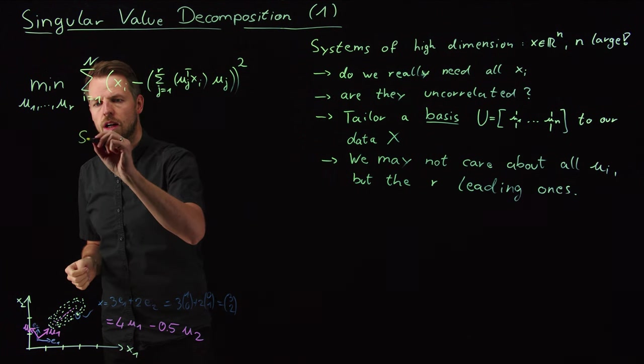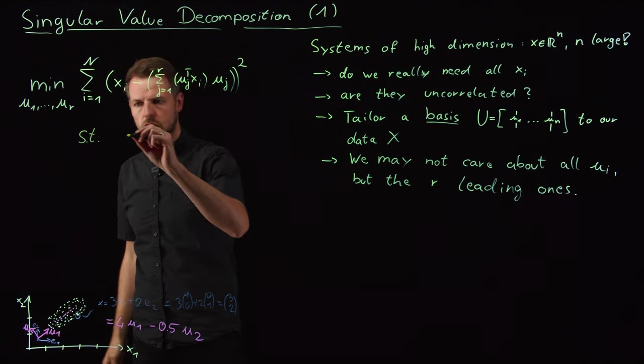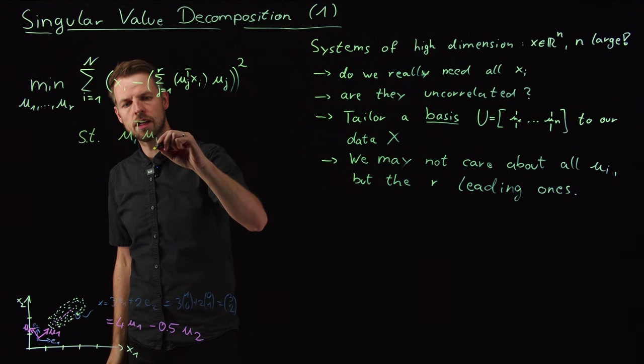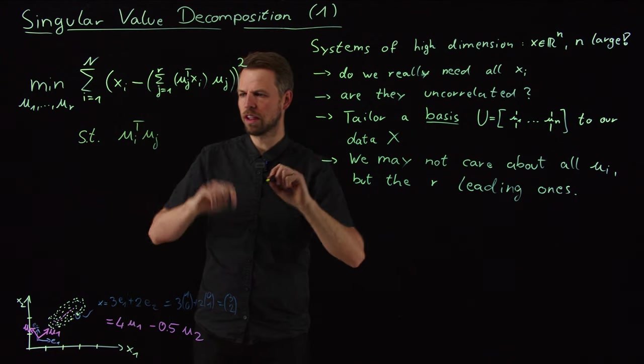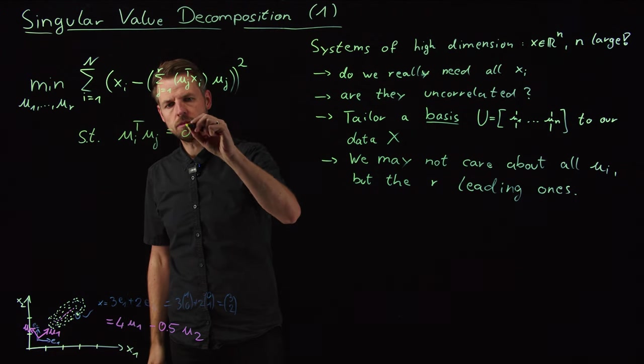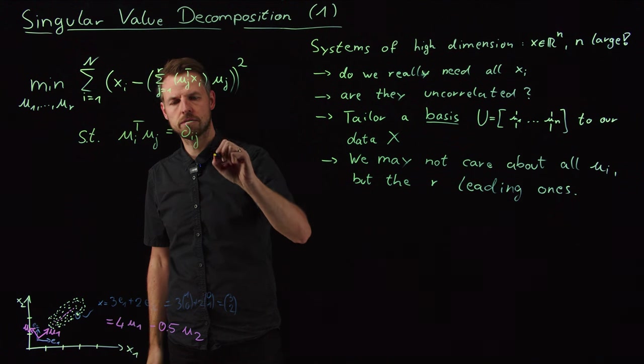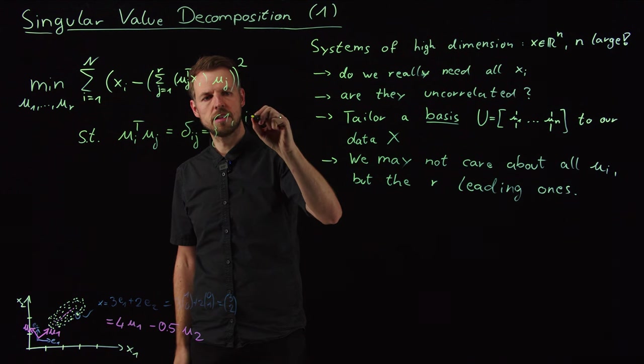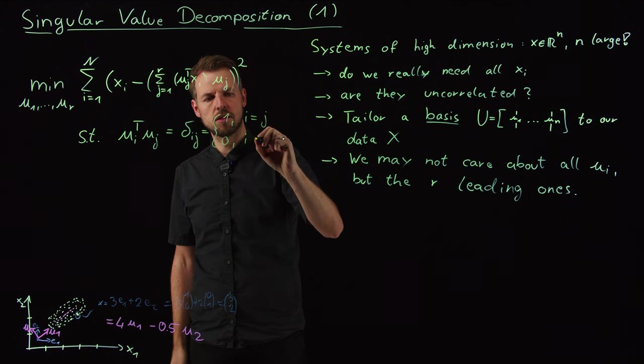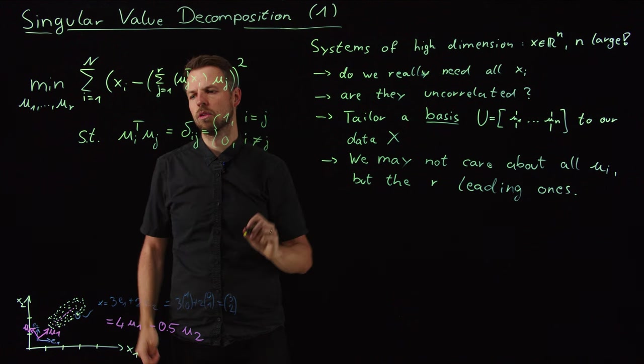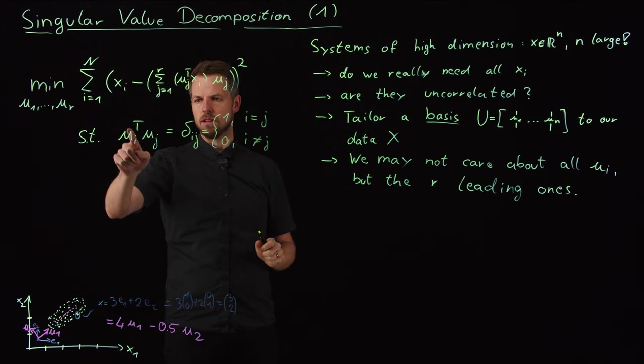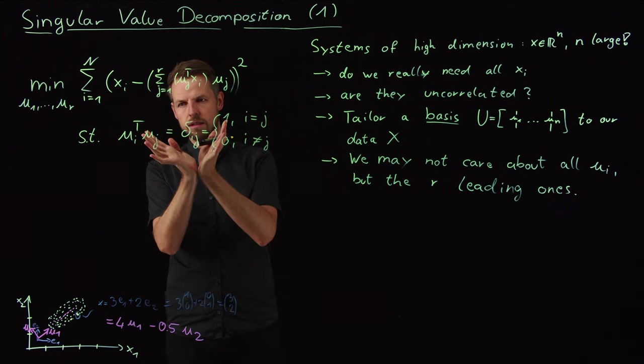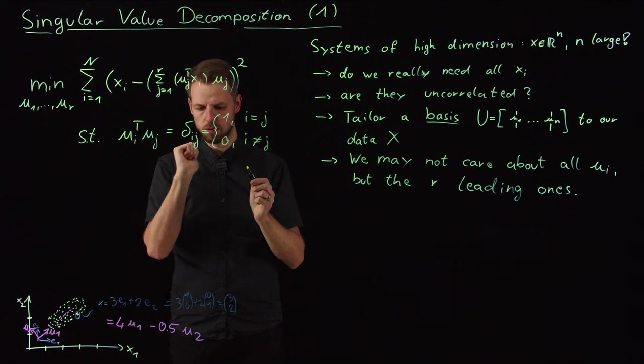One thing that we are going to add to make this a little bit more useful, let's say, we are not picking any vectors. But what we are going to do is that ui transpose uj, so the inner product between two of these vectors is what we call the Kronecker delta, which is 1 if i is equal to j and 0 if i is not equal to j. So what this means is they have unit length. ui times ui gives me a 1.